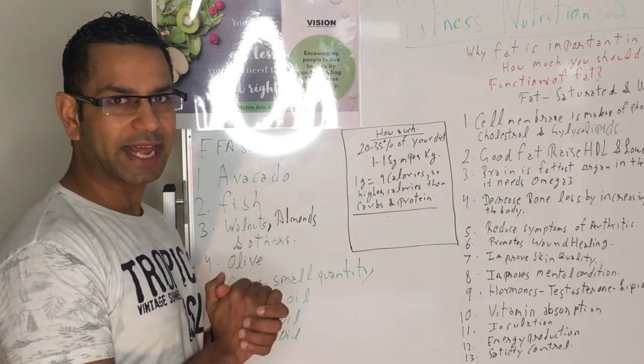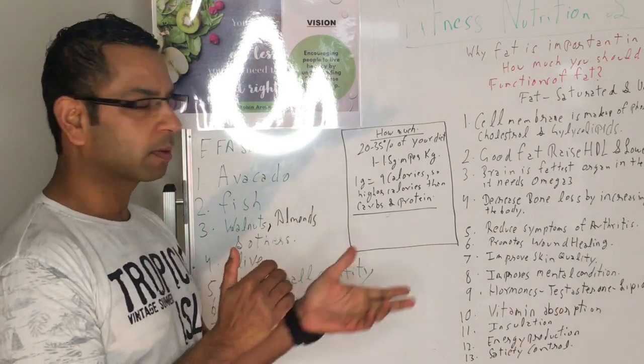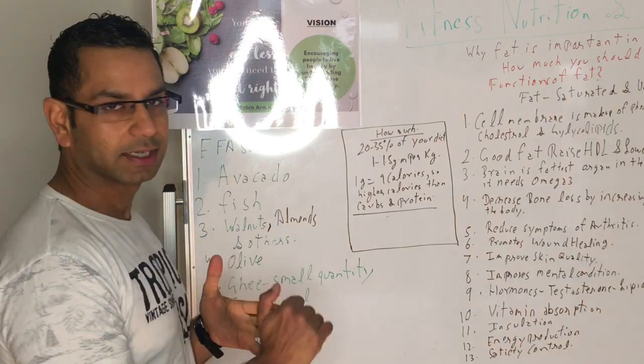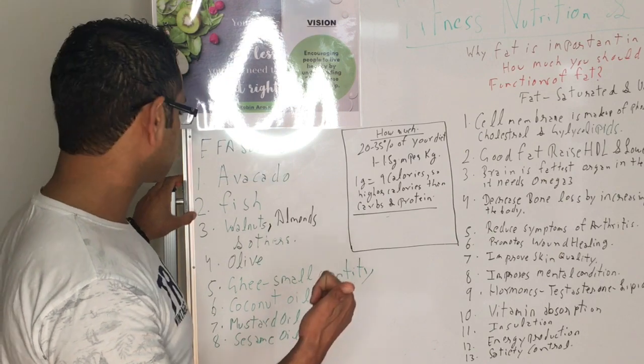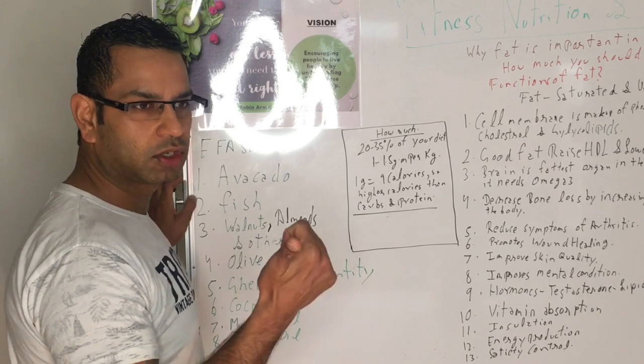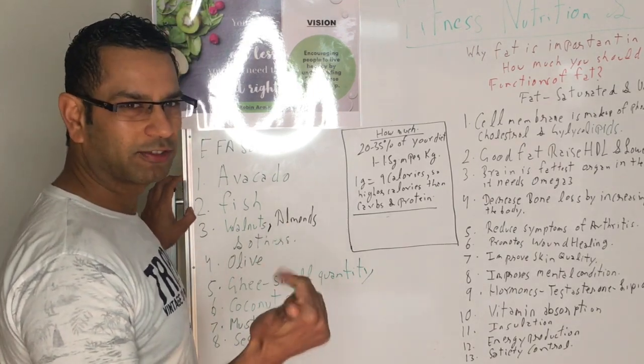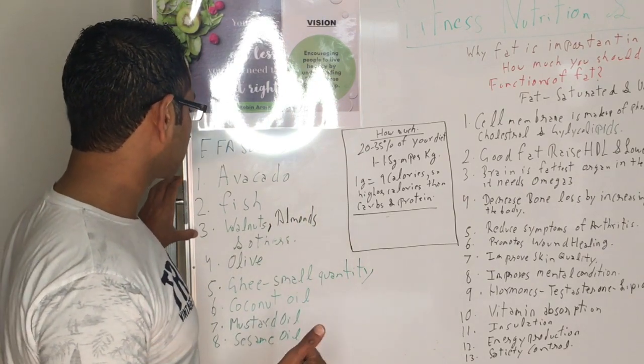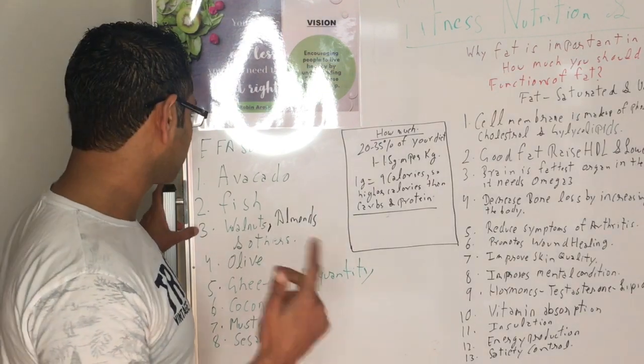Now let's look at essential fatty acid sources. First is avocado, which is really rich in monounsaturated fatty acids and is known to reduce heart diseases. Second is fish, which is rich in omega-3. Omega-3 is divided into EPA and DHA, which are found in fish. DHA is really good for the heart and EPA is good for the brain. Third is walnuts and almonds, which are rich in polyunsaturated fats. Walnuts are rich in omega-3 and ALA, alpha-linolenic acid, which is important for insulin.